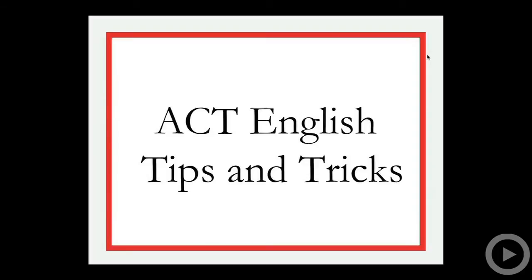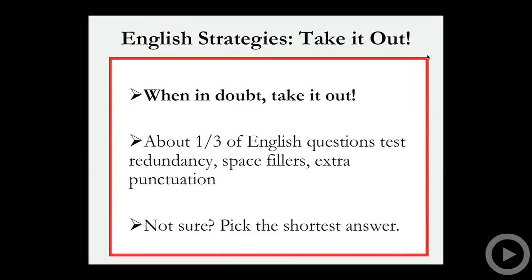On to ACT English tips and tricks. First: when in doubt, take it out. About a third of English questions test economy — things like redundancy, space fillers, extra punctuation, things that should be shorter, more concise, clearer. If you're ever not sure on an English question, pick the shortest answer. It's correct about a third of the time, sometimes more. Don't guess blindly — let's try some examples.